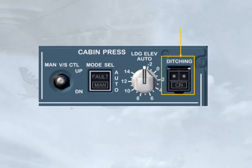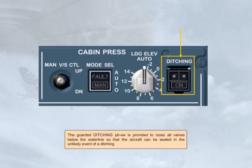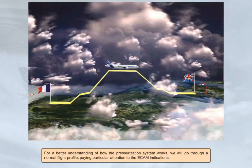The guarded ditching push-button switch is provided to close all valves below the waterline, so that the aircraft can be sealed in the unlikely event of a ditching. For a better understanding of how the pressurization system works, we will go through a normal flight profile, paying particular attention to the ECAM indications.